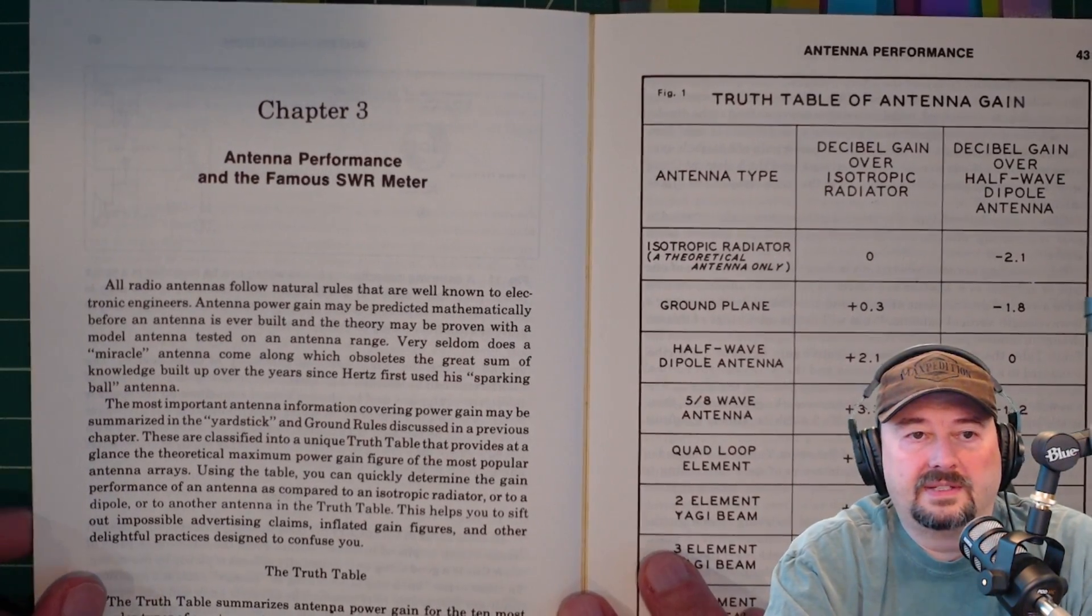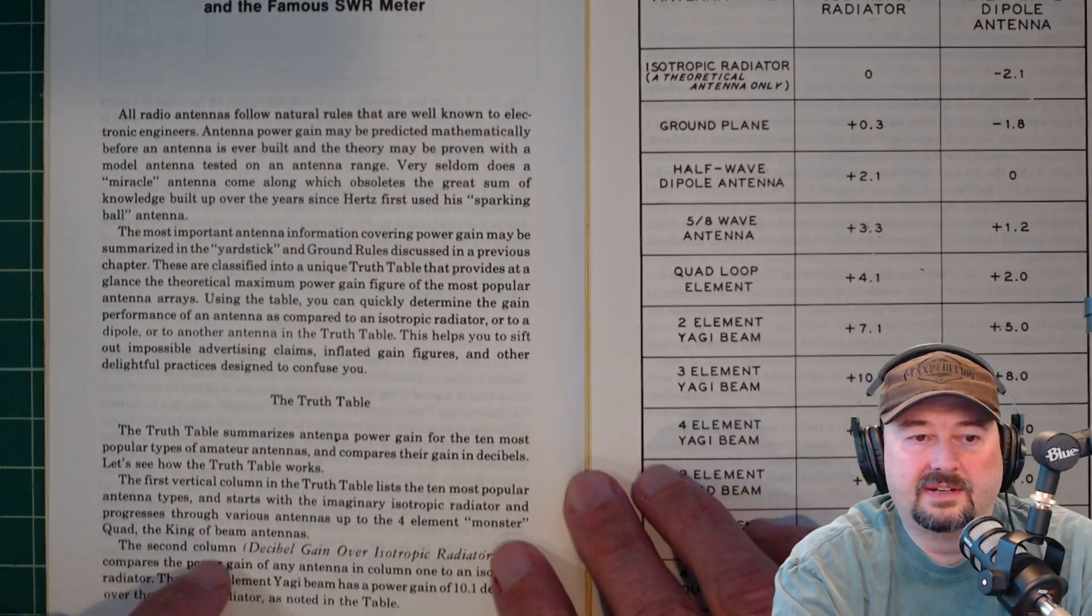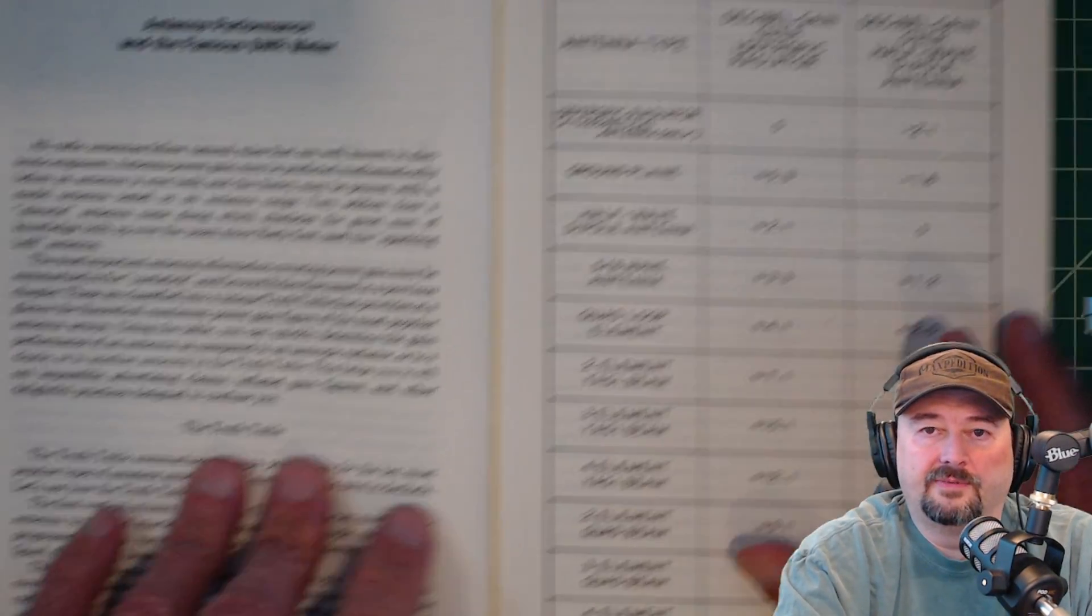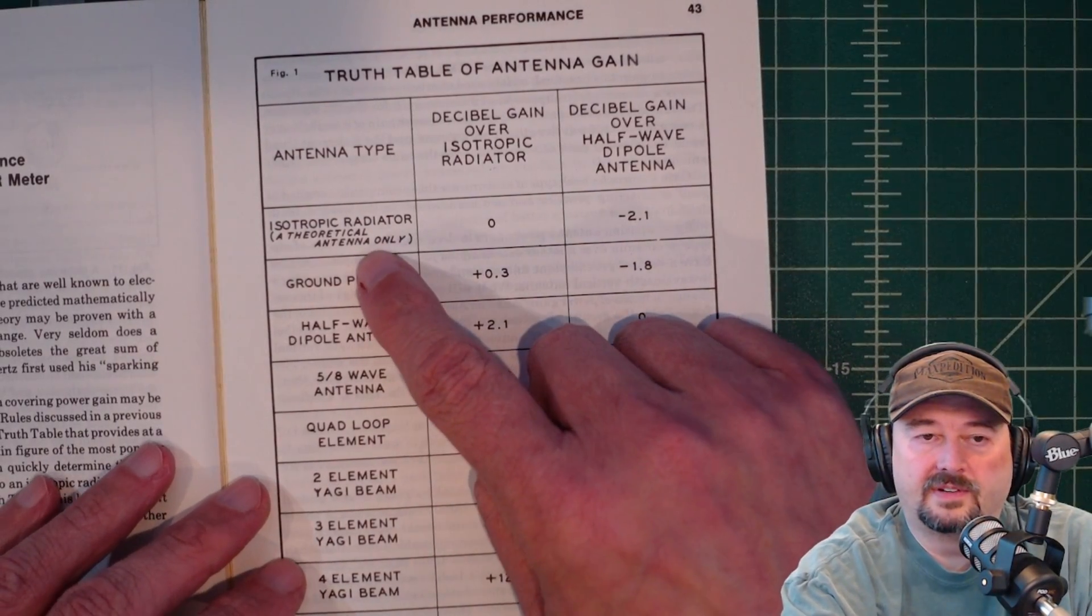In Chapter 3, he talks about antenna performance in the famous SWR meter. And he has something here called the truth table. And it's really helpful. It's right here. And it talks about different antenna types. Like you have your isotropic radiator, ground planes, half-wave dipole antennas.